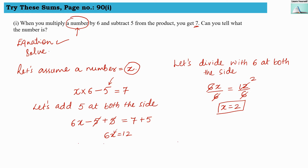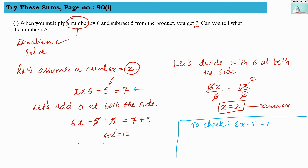So we got the answer that whatever number they mentioned was 2. Now let us check whether what we have found is correct or not. You do not need to write this — it is just for understanding. Now this is our equation. Let us put x equals to 2 into that. Our equation is 6x minus 5 equals to 7. When we substitute x equals to 2, we should get 7. So substituting x equals to 2: 6 into 2 is 12, minus 5. So 12 minus 5 gives 7. RHS equals LHS, so our equation and x equals 2 is correct.